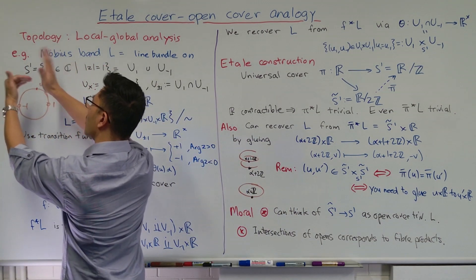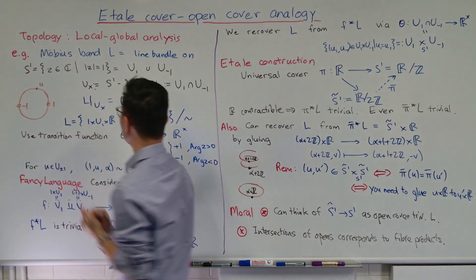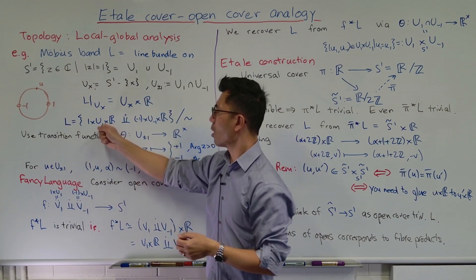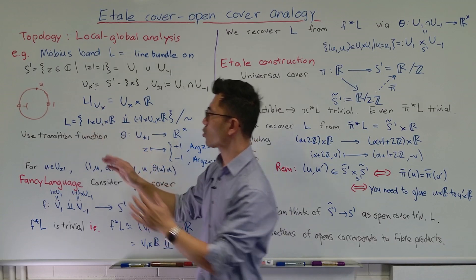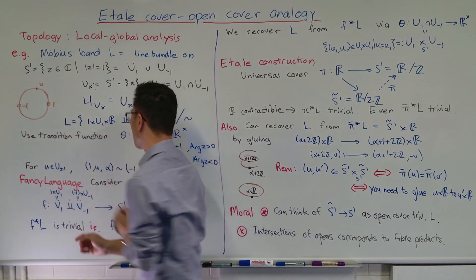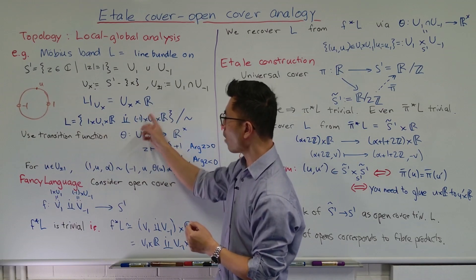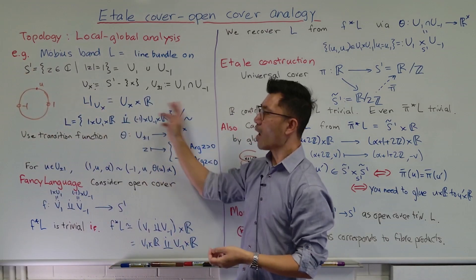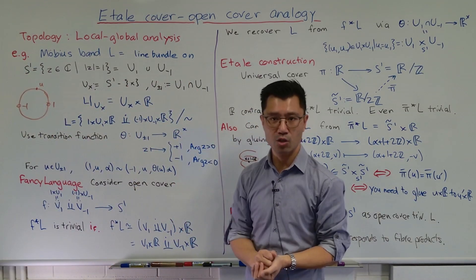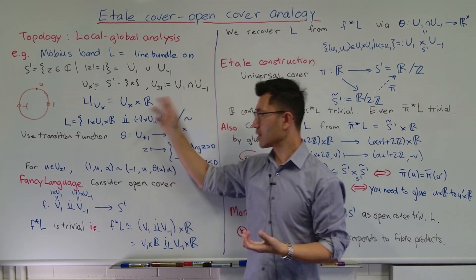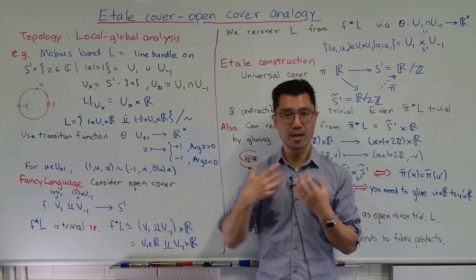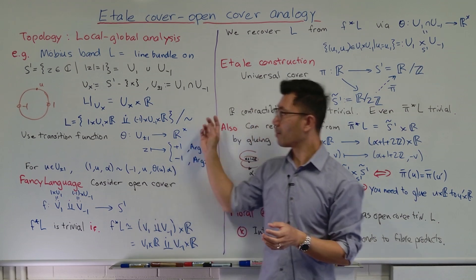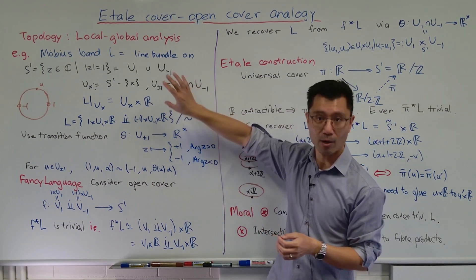For these two sheets, we'll look at a copy of U1 — that's 1 cross U1 cross R — and a separate sheet by taking a copy of U-minus-1 — that's minus 1 cross U-minus-1 cross R. Now we just have to glue those two together by some equivalence relation, and there's a standard way of doing that. This is a standard procedure for constructing vector bundles, and that's via transition functions. If you want to find out more about this, you can look at my playlist on vector bundles — there's a video about transition functions.